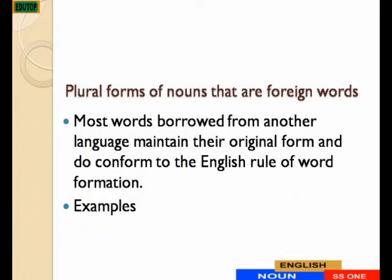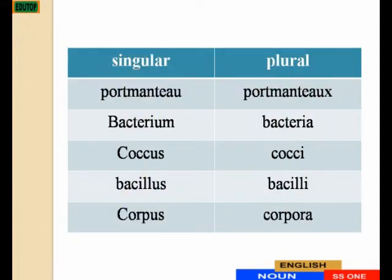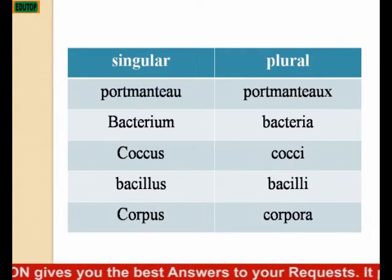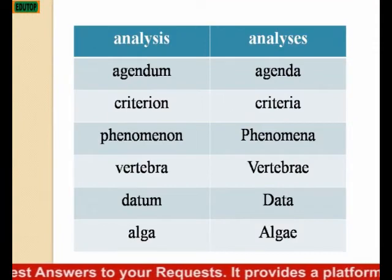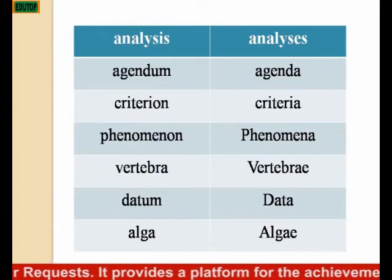Plural forms of nouns that are foreign words. Most words borrowed from another language maintain their original form or do not conform to the English rule of word formation. Examples: bacterium becomes bacteria, bacillus becomes bacilli, corpus becomes corpora, analysis becomes analyses, agendum becomes agenda, criterion becomes criteria, phenomenon becomes phenomena.